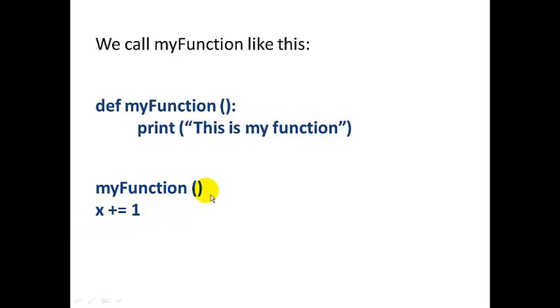So what happens when we call myFunction from outside of the function? Let's say the main part of the program. Execution transfers up to the myFunction line. Next, the print statement will execute. This is my function. And we'll see output. This is my function.